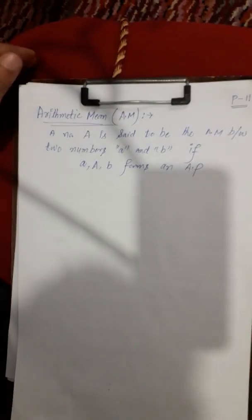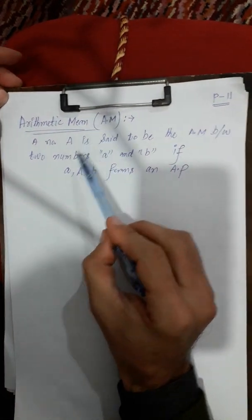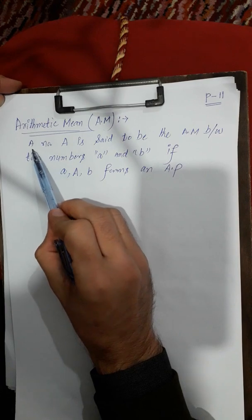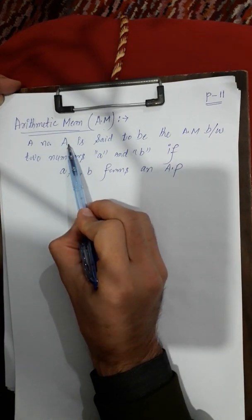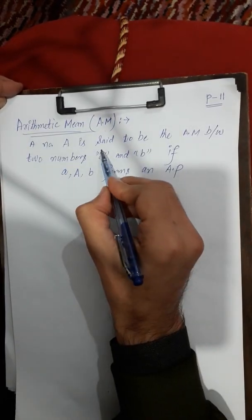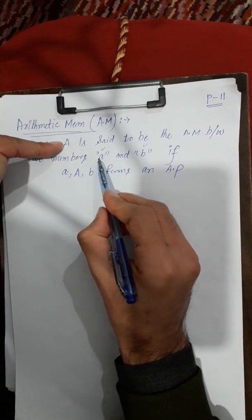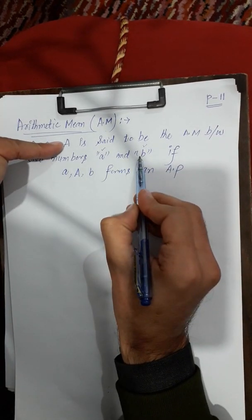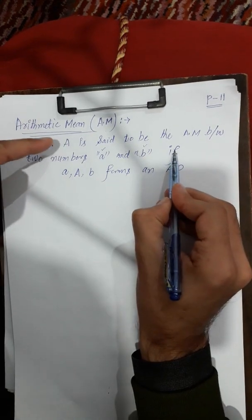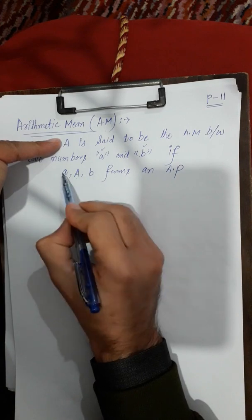The next topic is arithmetic mean, A.M. The definition is: a number, capital A, is said to be the arithmetic mean between two numbers a and b. Capital A is the arithmetic mean between a and b.